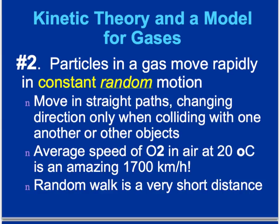The second assumption is that particles in a gas move rapidly and are in constant, random motion — there's really no rhyme or reason to their motion. They move in straight line paths, changing direction only when colliding with one another or with an object like the wall. For example, the average speed of an oxygen molecule at about 20 degrees Celsius is an amazing 1700 kilometers per hour. We sometimes describe the path these molecules take as a random walk.